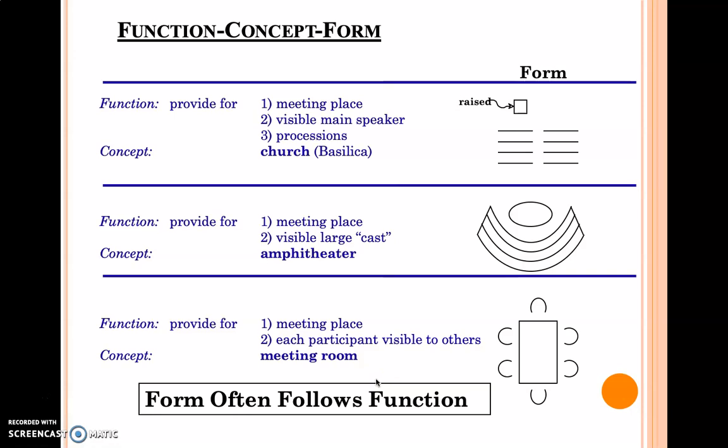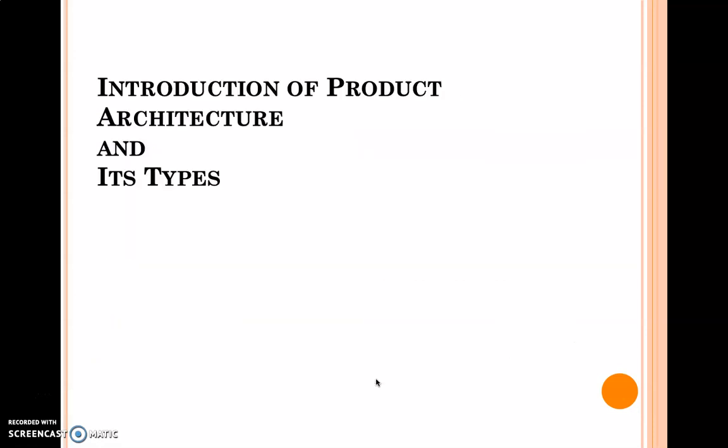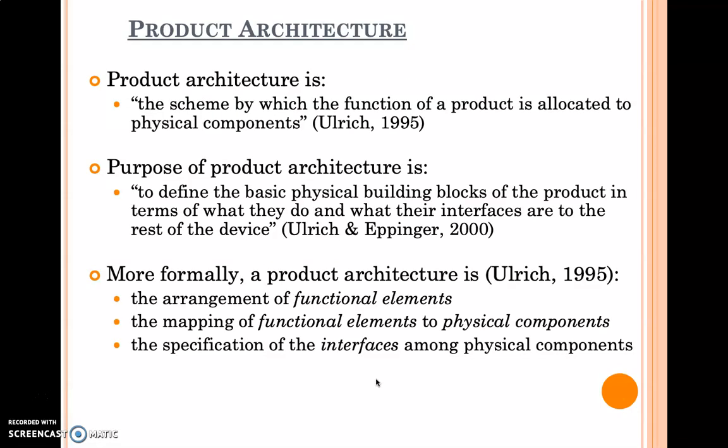Now what do you understand by product architecture and its type? Basically, product architecture, if you will go to the product development book or design engineering book of Ulrich and Eppinger, you will find the definition: the scheme by which function of product is allocated to physical component. That is called as product architecture.